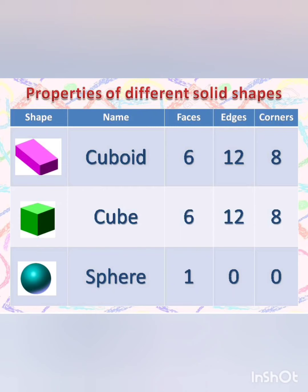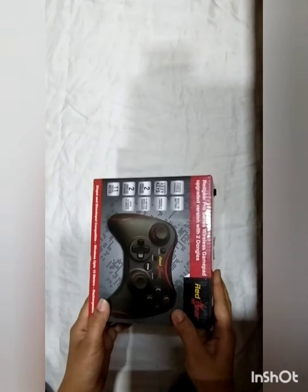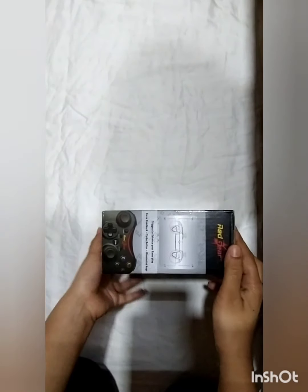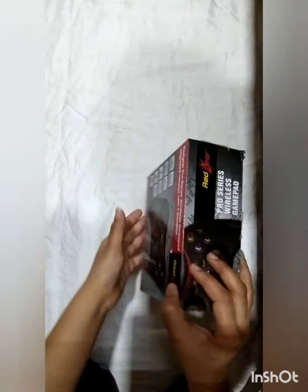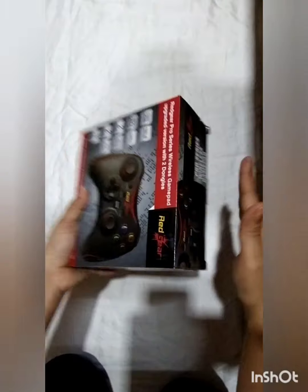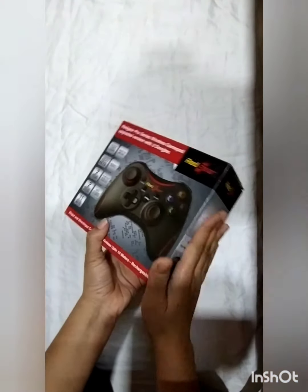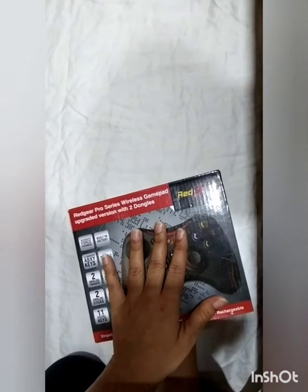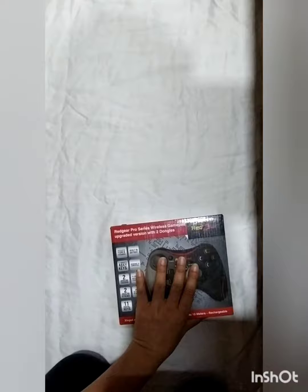The first shape with rectangular faces is called a cuboid. The cuboid has six faces, twelve edges, and eight corners. This box has rectangular faces, so this is a cuboid. Let's count its faces: one, two, three, four, five and six — all four faces on the sides, top and bottom. So we have six faces.